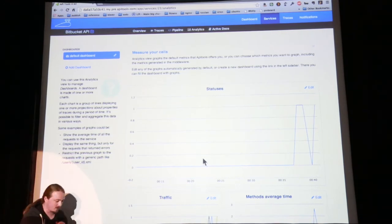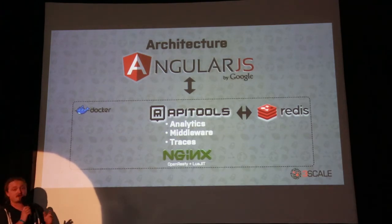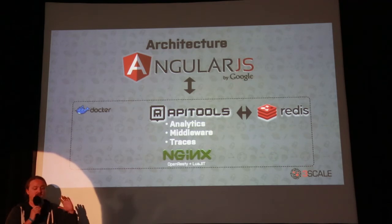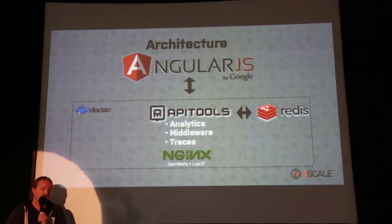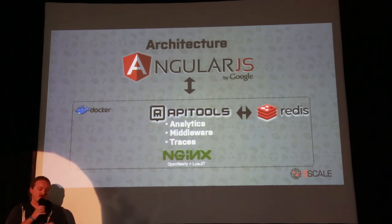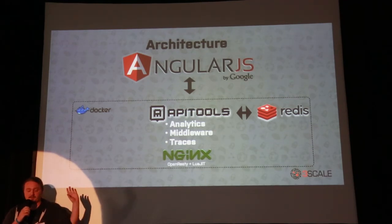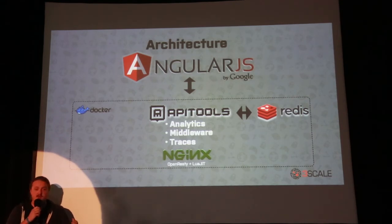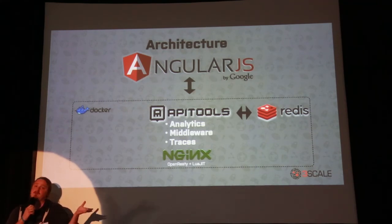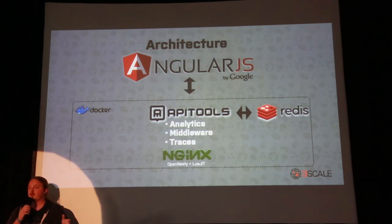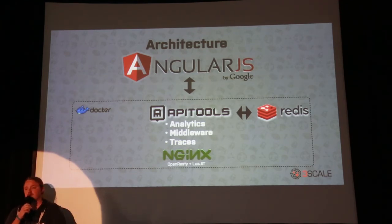Thank you, Vanessa, for the demo. Getting into a bit of technical detail: all the reactive interaction you've just seen is made with AngularJS, a reactive framework by Google. From the Nginx side, we have a Docker container — if you're not familiar with Docker, you should take a look; it's really helpful for deploying and testing your environment. We use Redis to store all the traces and analytics. To capture metrics and traces, we use Nginx with OpenRESTY and Lua. The middleware works the same way as Rack middlewares — it's a stack that goes from one to the other, with the last one hitting the API endpoint, handling both inbound and outbound traffic.